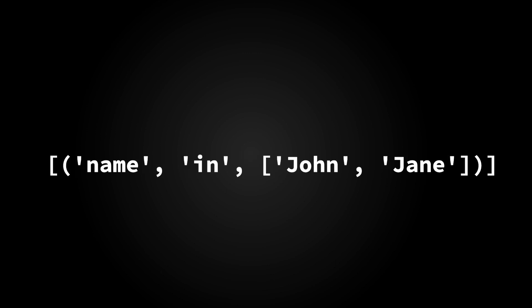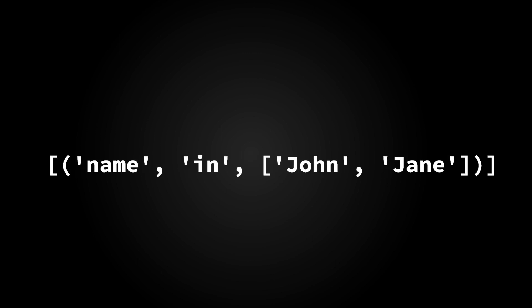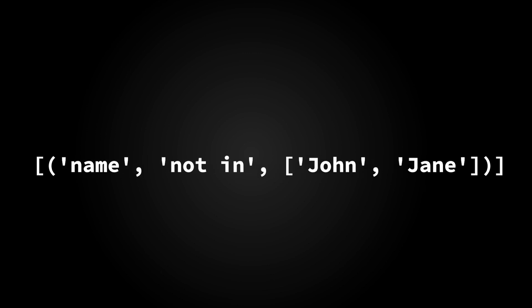The in operator is used to match a field with any of the values in a list. For example, 'name in John or Jane' will match records where the name field is either John or Jane. The inverse, the not in operator, is used to match a field with none of the values in a list. For example, 'name not in John or Jane' will match records where the name field is neither John nor Jane.